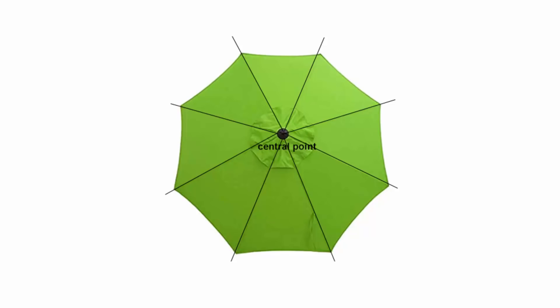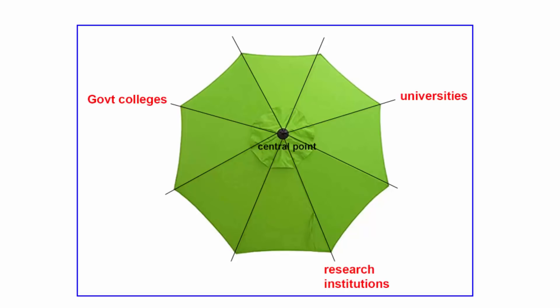The government is saying that all the government colleges, universities, and research institutions in a city — for example Delhi — will have a central body or authority that the government of India has established. This will act as a formal authority to help in conducting joint actions and operations in order to achieve higher goals.